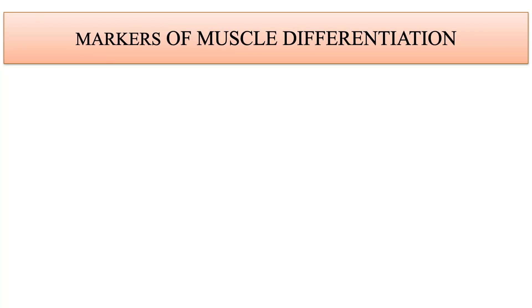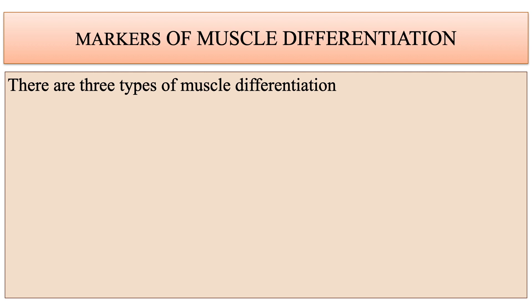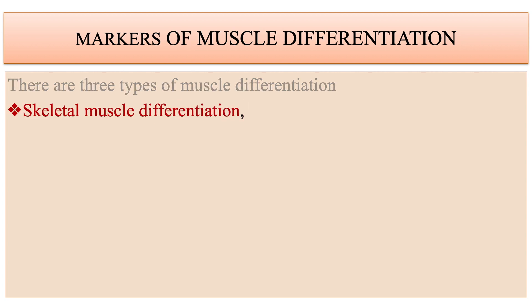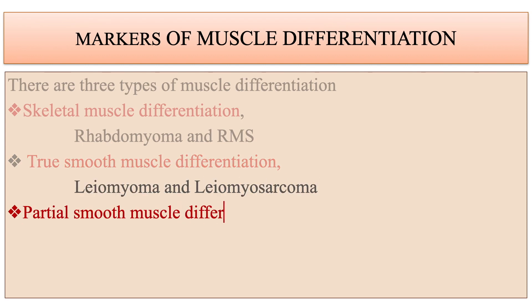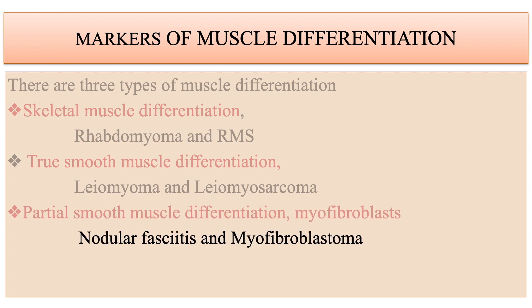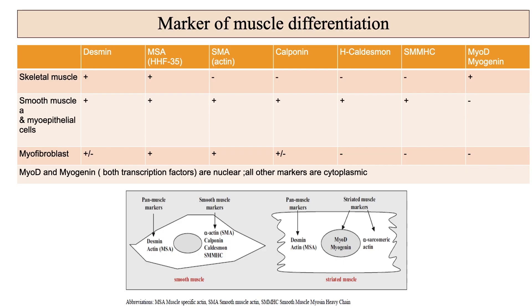There are three types of muscle differentiation. The first is skeletal muscle differentiation seen in rhabdomyoma and rhabdomyosarcoma. The second is true smooth muscle differentiation reflected in leiomyoma and leiomyosarcoma. The third is partial smooth muscle differentiation seen in myofibroblasts, also found in tumors like nodular fasciitis and myofibroblastoma. Desmin is a universal marker of muscle cells, expressed in both smooth and striated muscle, and variably expressed in myofibroblasts.